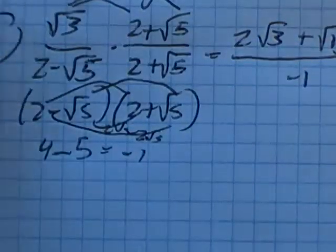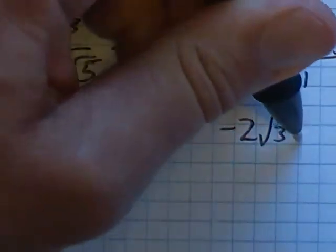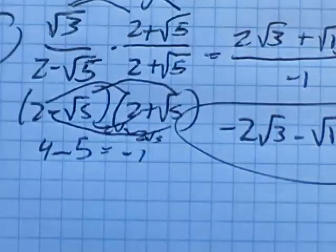So both these are divided by negative one. So this becomes negative two root three minus root fifteen.